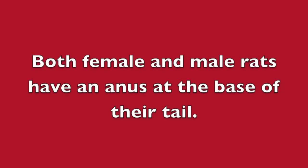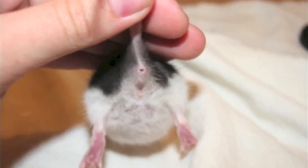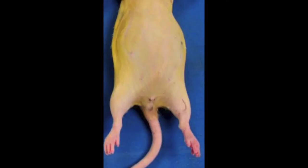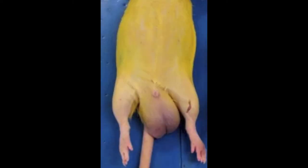Both female and male rats have an anus at the base of their tails. In female rats, the urinary and genital openings are separate. The urethral opening is most anterior, with a vaginal orifice just posterior to it. In males, the urethra is a common urogenital duct and opens at the tip of the penis. At the base of the tail, the sac-like scrotum contains testes, which are pretty evident in this picture.